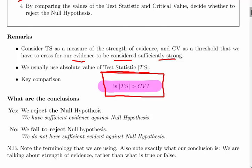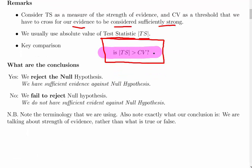There are two types of conclusions. If we say yes, we reject the null hypothesis, which is to say we have sufficient evidence against the null hypothesis. If no, we fail to reject the null hypothesis - we do not have sufficient evidence against the null hypothesis.